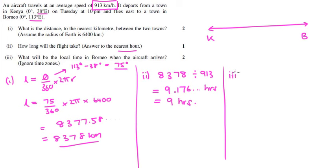Last question for this bit. What will be the local time in Borneo when the aircraft arrives? We're looking at time difference now. It was currently 10pm in Kenya on Tuesday. I know that my flight is going to take 9 hours. So I could add 9 hours to see what time I'll land in Kenya time. If I add 9 hours to 10pm, I'm going to add 12 hours and then subtract 3. That would be 10am, subtract 3 hours, 10 to 9, 9 to 8, 8 to 7. That gives me 7am on Wednesday. That is still Kenya time.